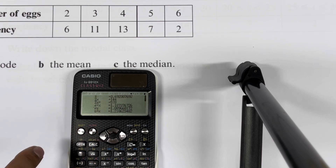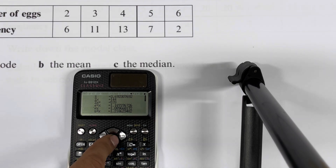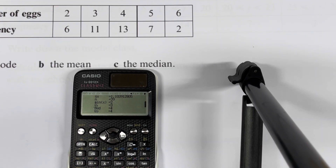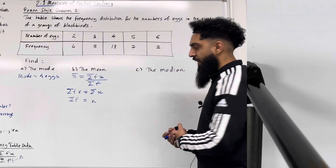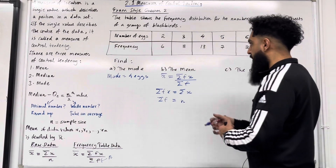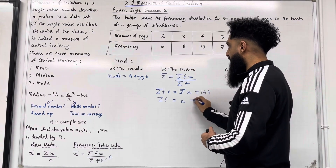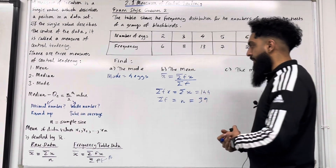The calculator gives us sum of X equal to 144, and scrolling down N is 39. Scrolling back up, X bar is 3.692307692. Using the Classwiz calculator, sum of X is 144 and N is 39.